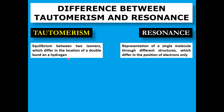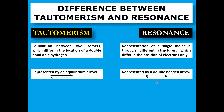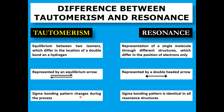In tautomerism, a hydrogen atom may change its position, and it is represented by an equilibrium arrow because it involves two different species. For resonance, because it's just a different representation of the same molecule, we use a double-headed arrow. In tautomerism, the sigma bonding pattern may change during the process, whereas in resonance the sigma bonding pattern is identical in all resonance structures — only pi electrons are involved, and sigma bonds do not move.